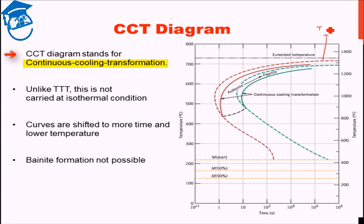Now suppose that you held the material at let's say 650 degrees Celsius isothermally, you hit this curve, you hit the finished curve of pearlite and you got 100% pearlite.